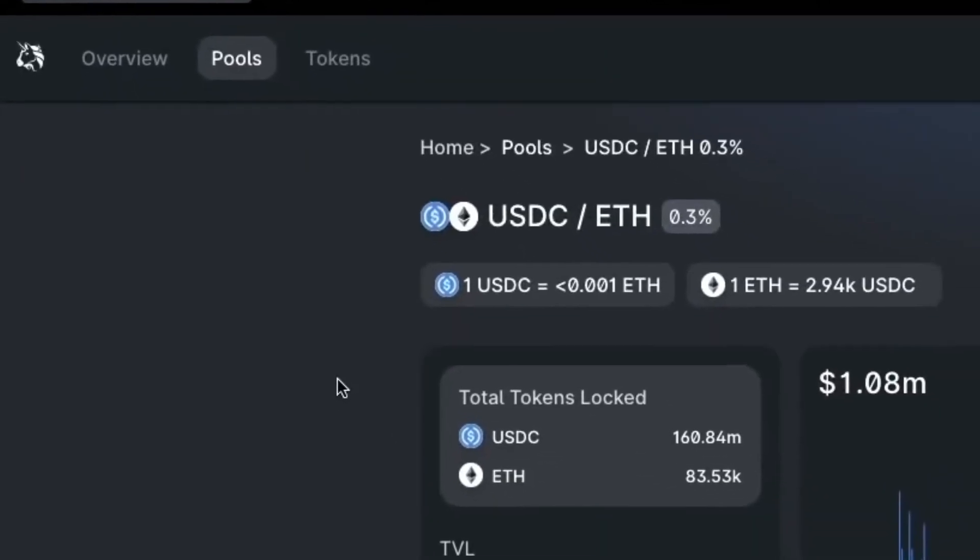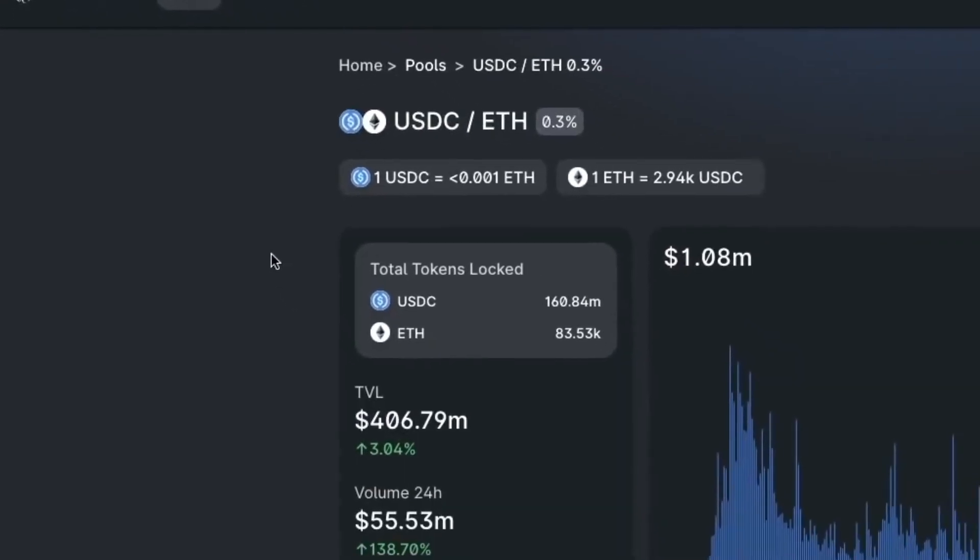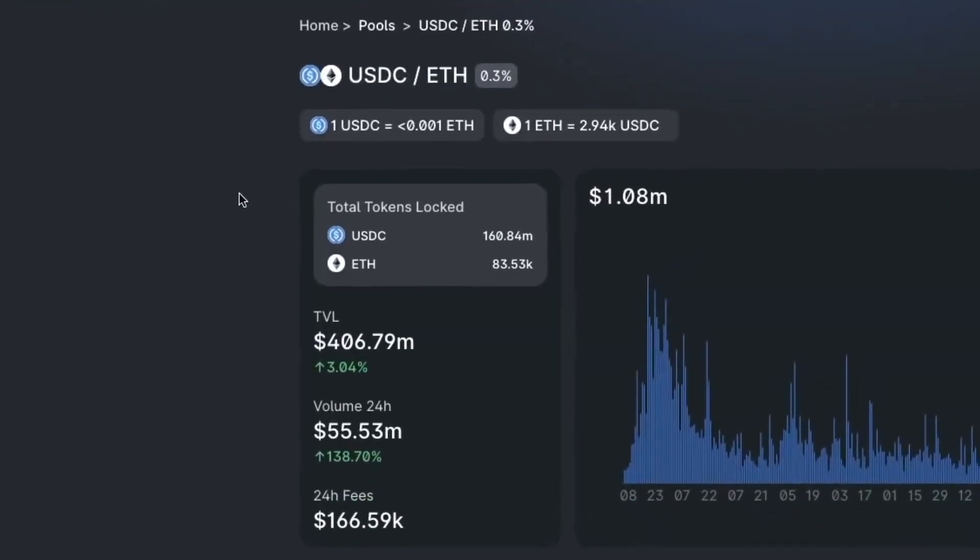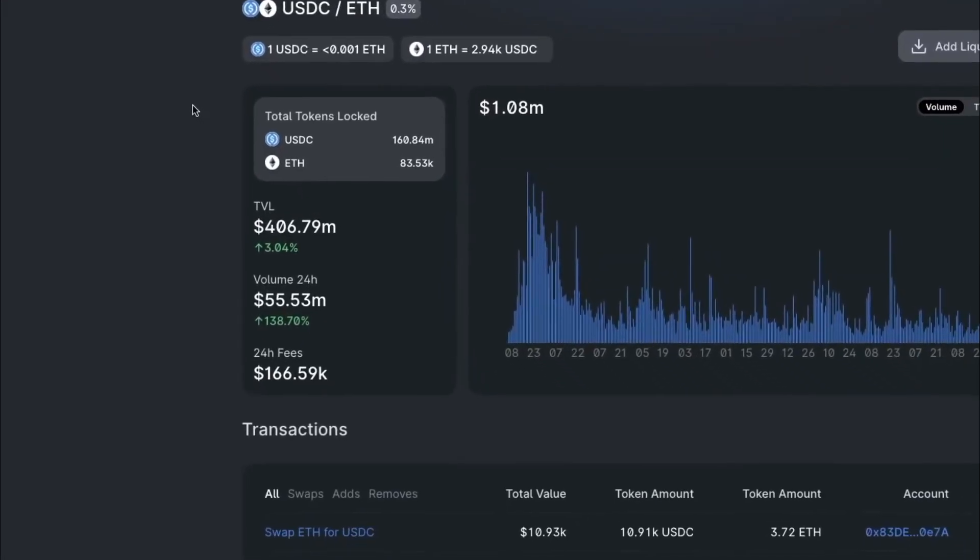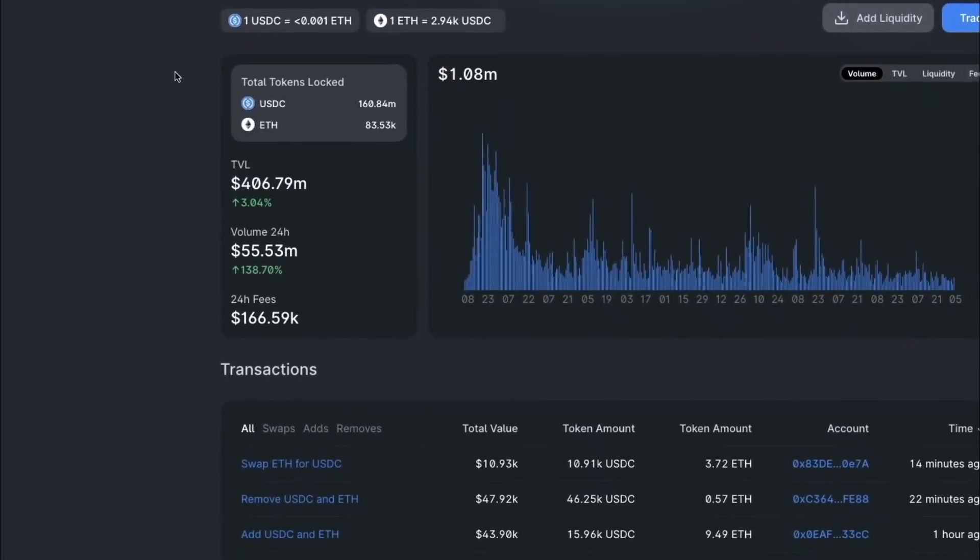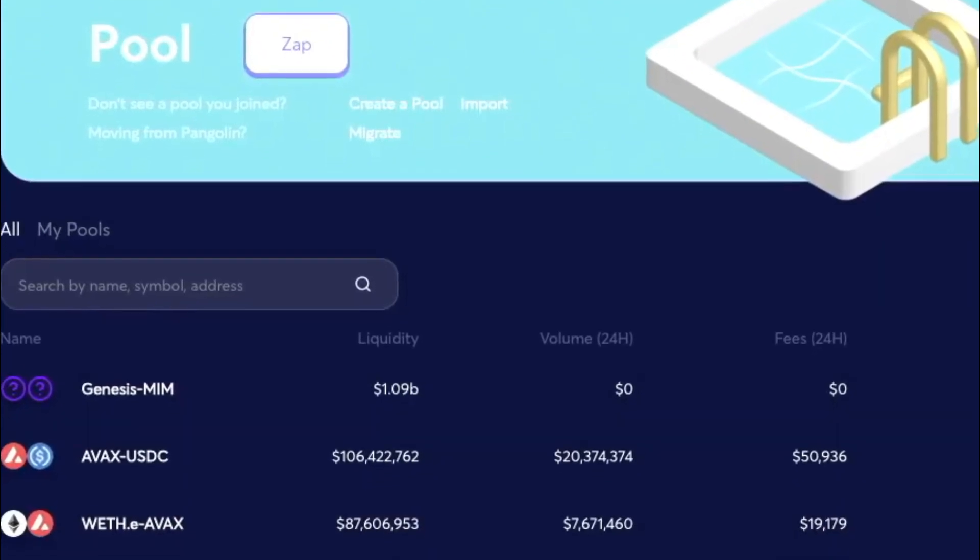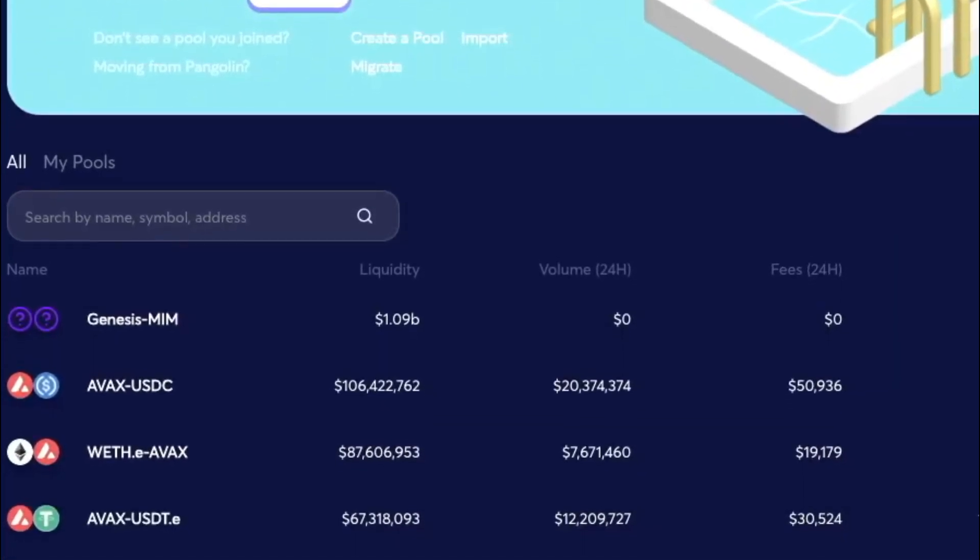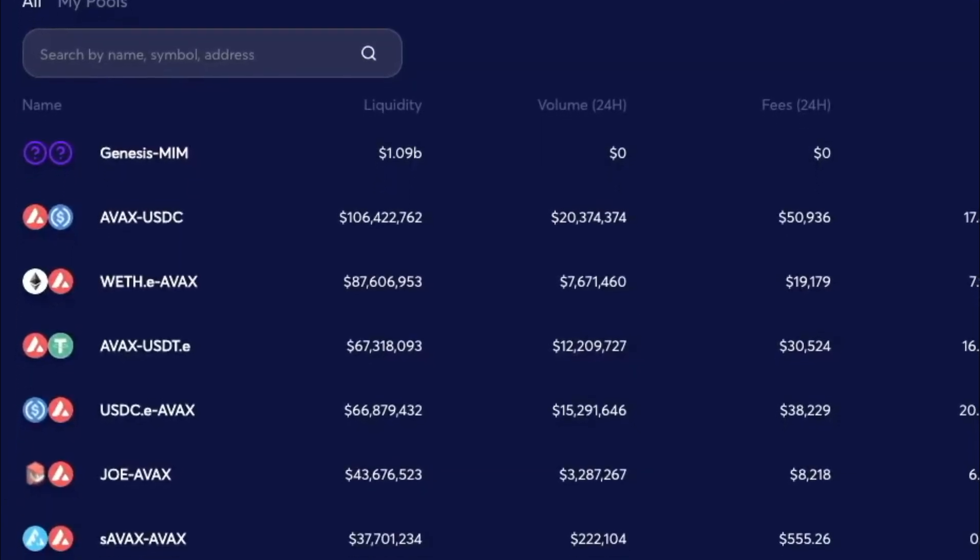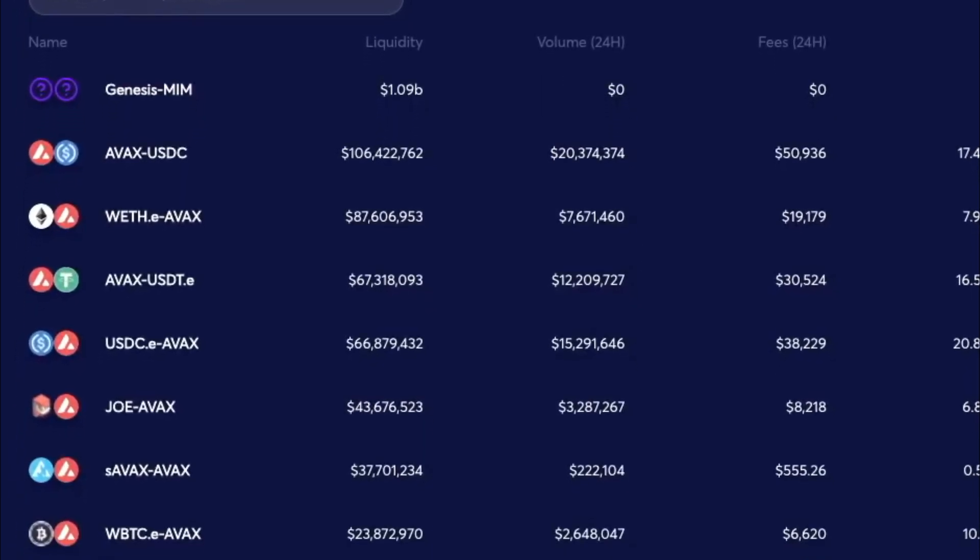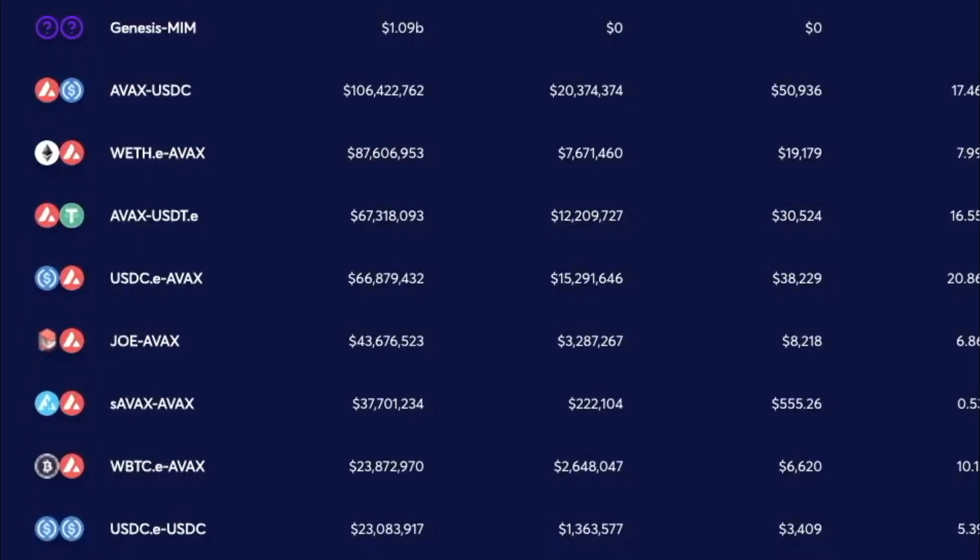In addition to liquidity pools, several protocols prioritize the optimal allocation of funds to liquidity pools. Yearn, for instance, utilizes AAVE, Compound, DIDEX, and Fulcrum to optimize token lending for the highest possible return. When tokens are deposited, they are transformed to Y tokens, which are periodically rebalanced to target the most lucrative possibilities.